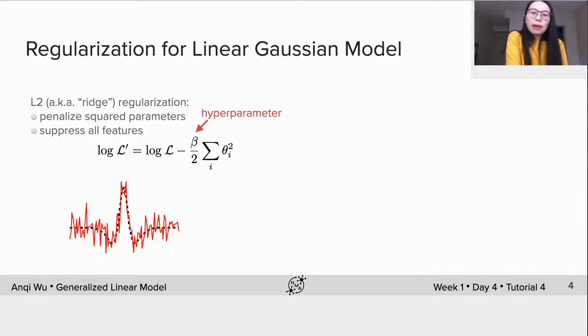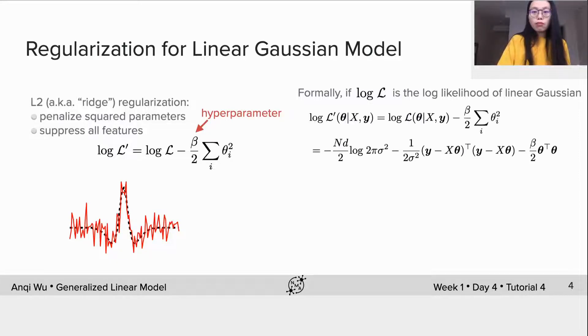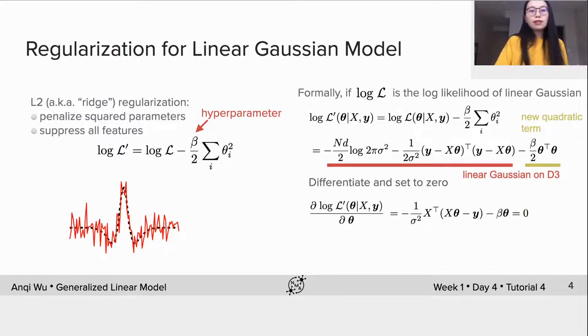Now let's briefly talk about how we derive the estimate when we have this additional penalty term to the linear model. Formally, if log-likelihood is linear Gaussian, we can write the new log-likelihood as follows. We should be familiar with this function now. The first two terms are from the linear model learned on day three. The only new term is this beta multiplying theta transpose theta.